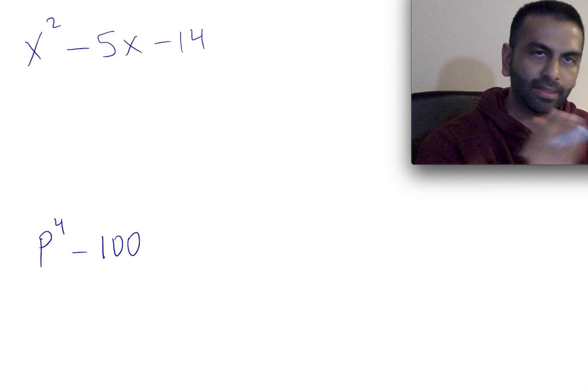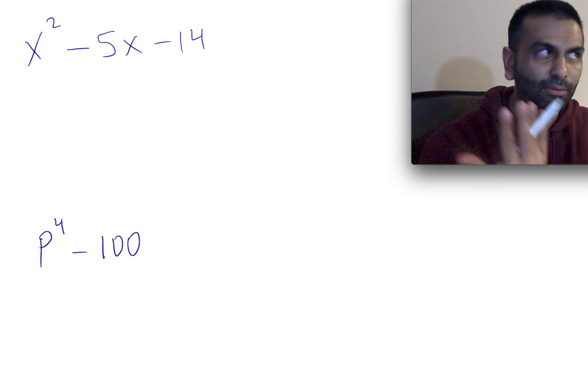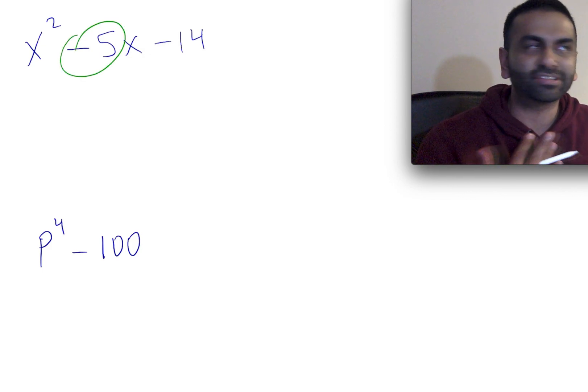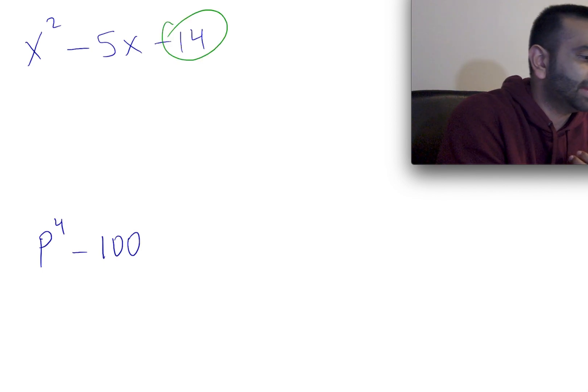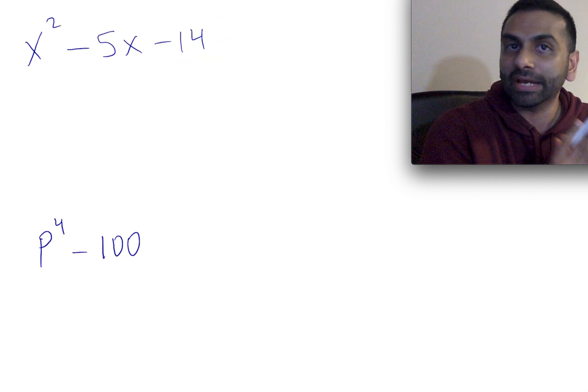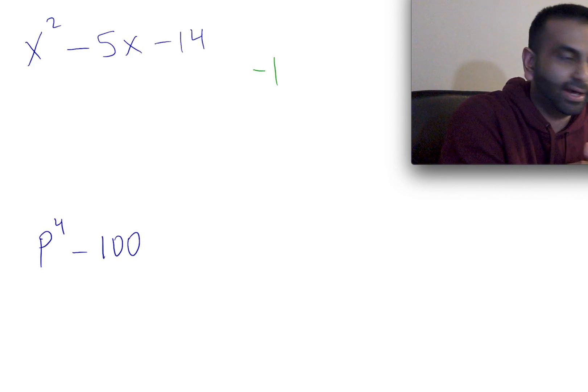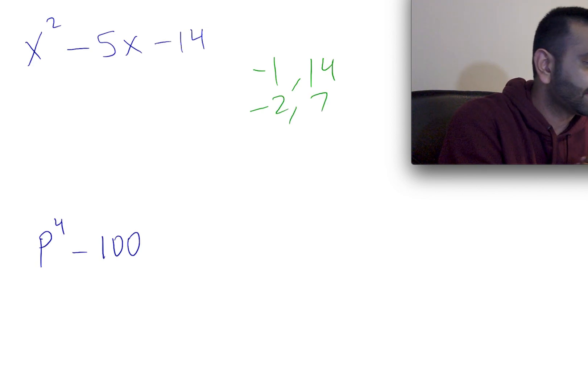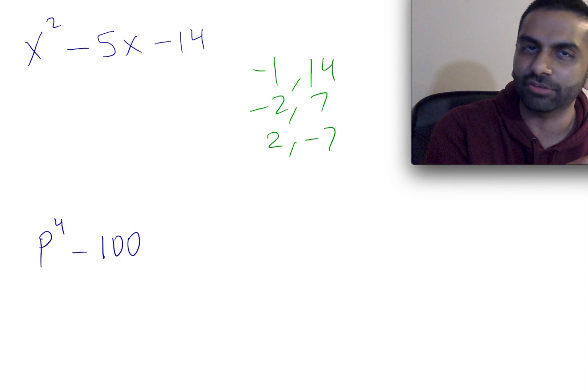How do we find that? What's the process? Two numbers that add up to negative 5—there's infinitely many sets of numbers that can add up to negative 5. But the easier thing to do is negative 14. What are two numbers that multiply to give you negative 14? Let's list them out. Negative 1 and 14, that multiplies to give you negative 14. Negative 2 and 7. But then also we have 2 and negative 7. You could keep going like that, but usually you'll start seeing a trend pretty quickly.